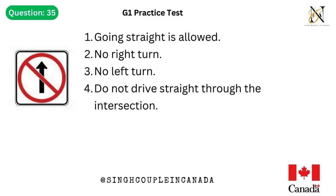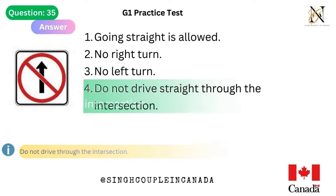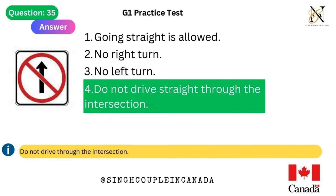Question 35. This traffic sign means: 1. Going straight is allowed. 2. No right turn. 3. No left turn. 4. Do not drive straight through the intersection. Answer is 4. Do not drive straight through the intersection.